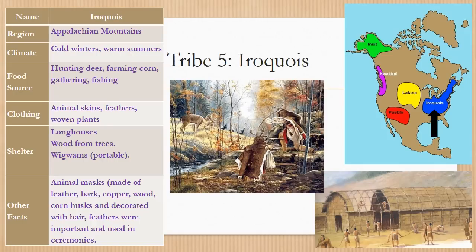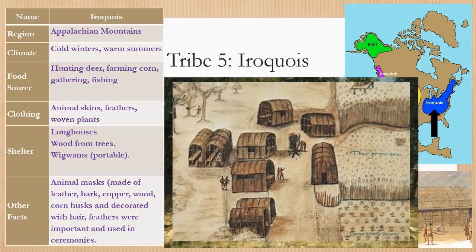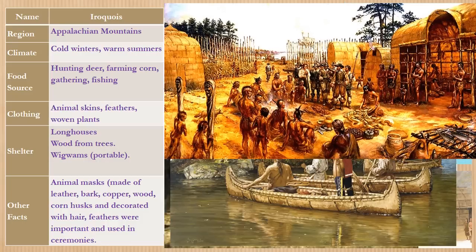The final tribe is the Iroquois. The region they lived in was the Appalachian Mountains. The climate was cold winters and warm summers. Their food source was hunting deer, farming corn, gathering, and fishing. Clothing included animal skins, feathers, and woven plants. Shelters were primarily longhouses made of wood from trees, and wigwams that were somewhat portable. Other facts: animal masks made of leather, bark, copper, wood, and corn husks, and decorating their hair with feathers were very important and used for ceremonies. The Iroquois had some of the first contact with Englishmen.